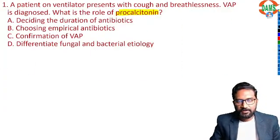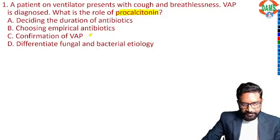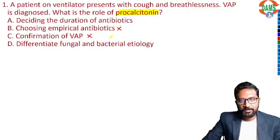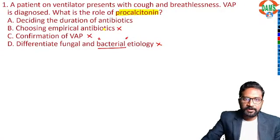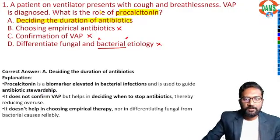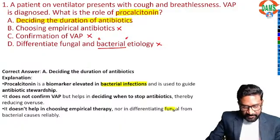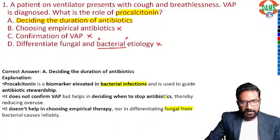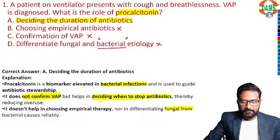What is the role of procalcitonin? Procalcitonin does not help you choose empirical antibiotics. It does not help you confirm VAP. Even though it is mostly elevated in bacterial infections, it may also be elevated in fungal and viral infections. So it cannot differentiate those. What it can tell you is when to de-escalate antibiotics — it always helps in deciding when to stop antibiotics.